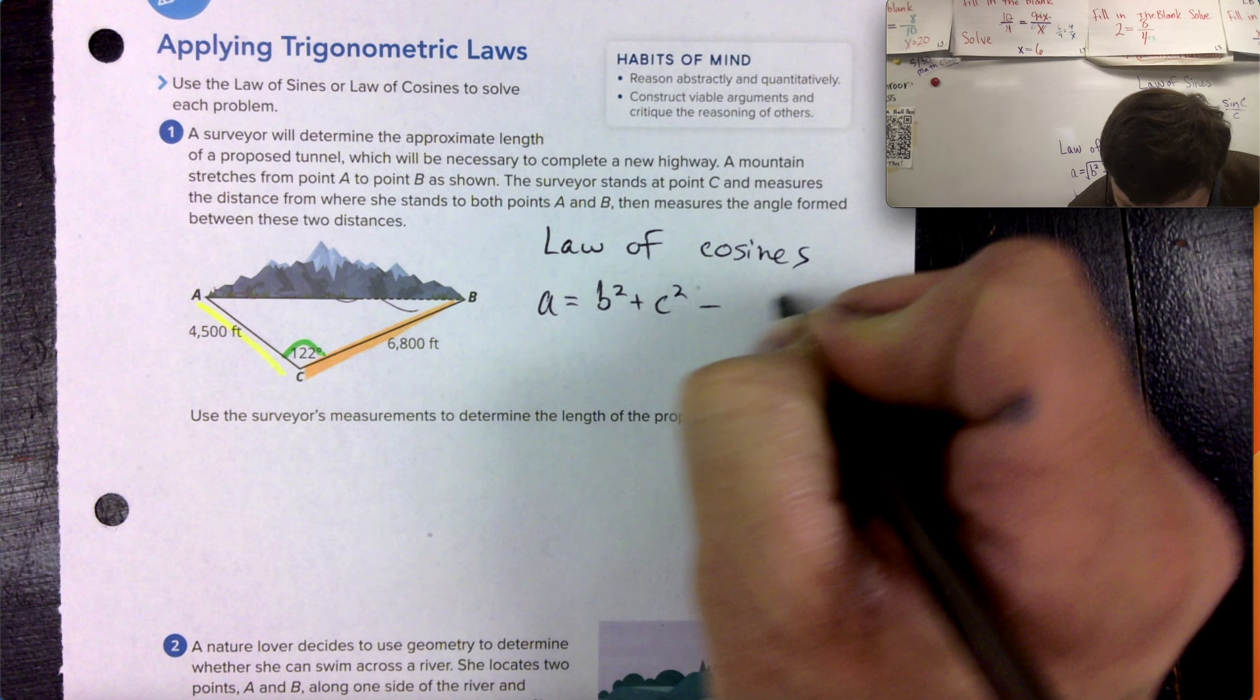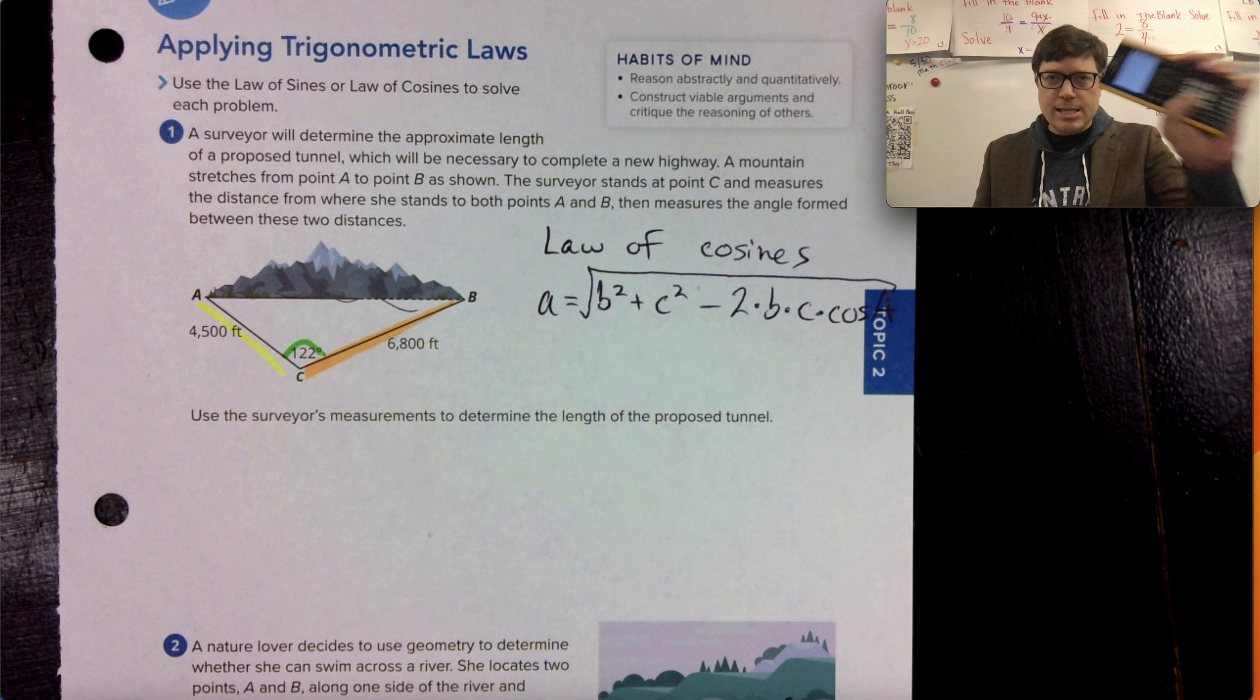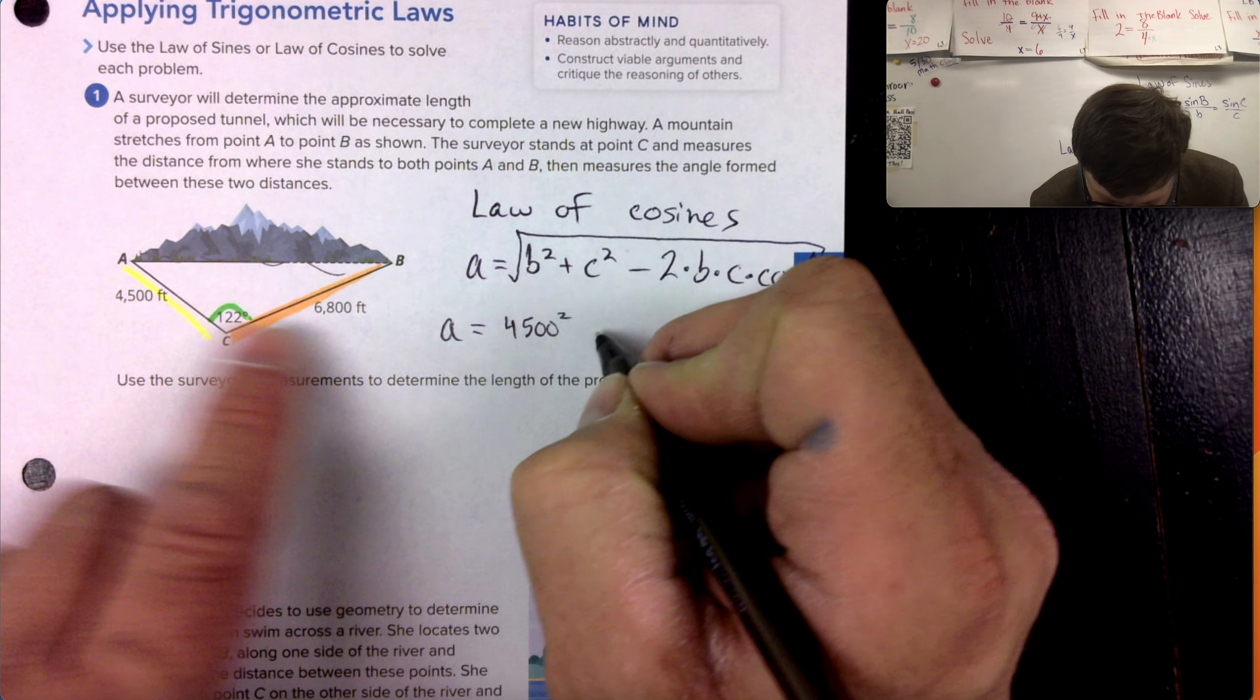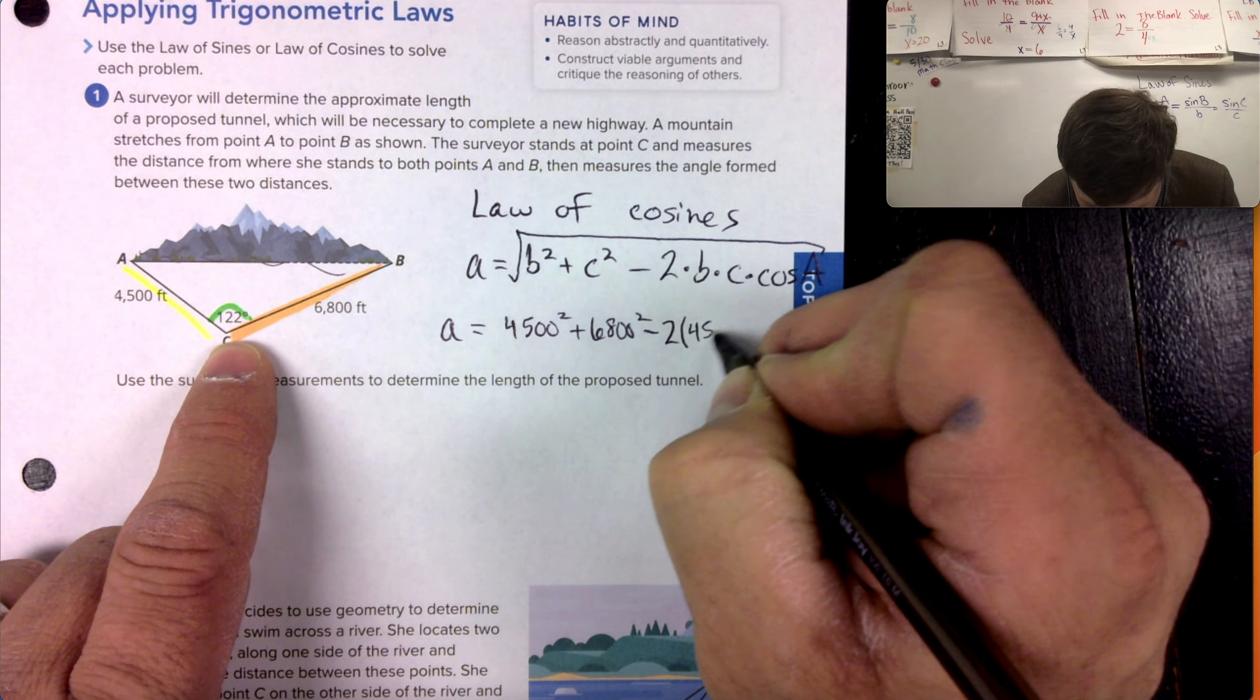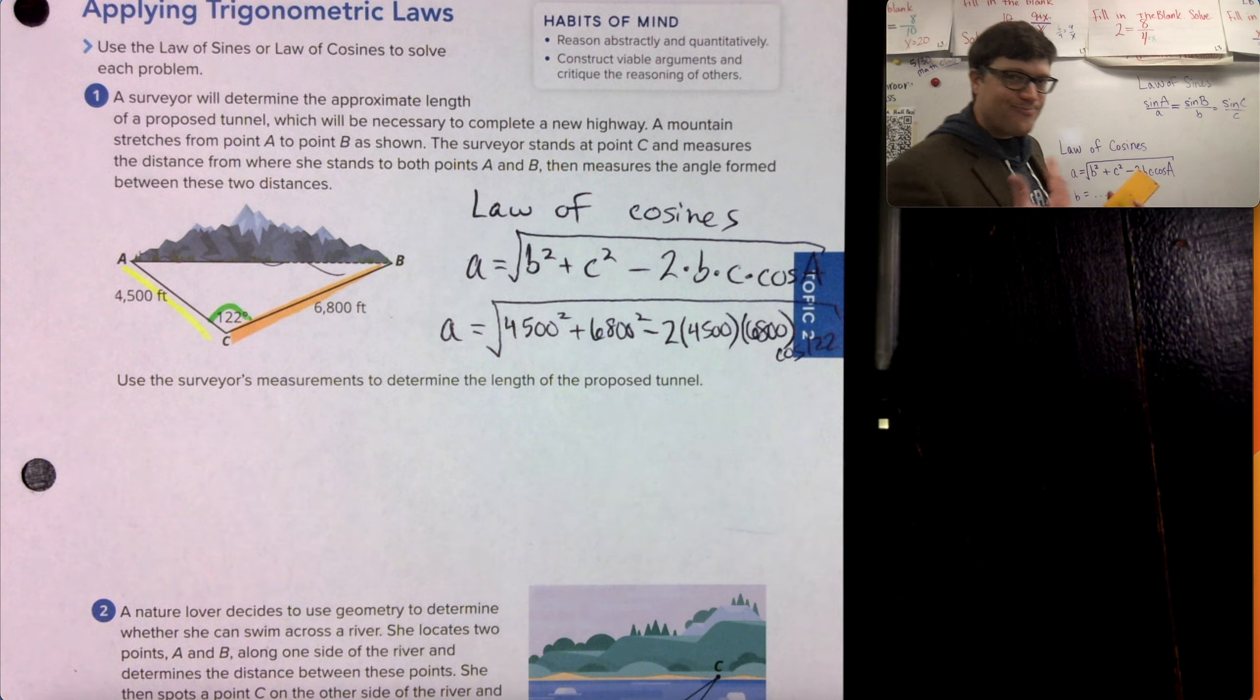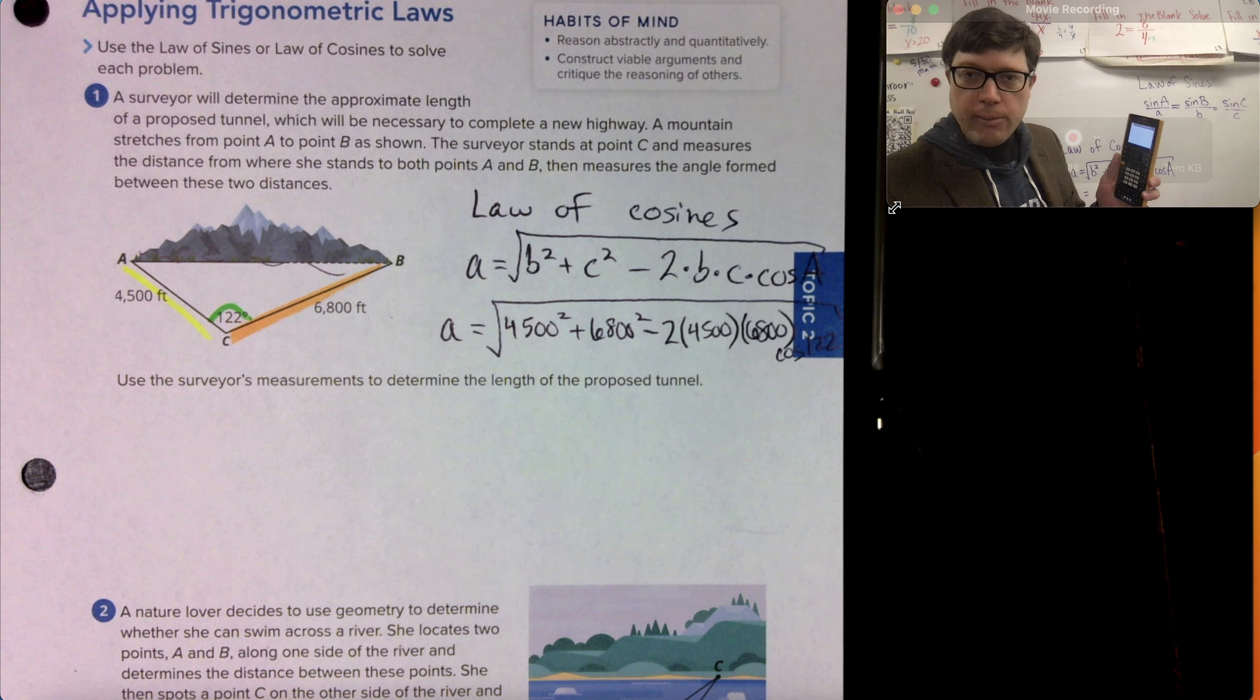A equals B squared plus C squared minus two times B times C times cosine of A. And we're going to square root. And all of that can go into the calculator right now. I'm going to handwrite it all out, but then I'm going to go to the calculator with it. So A equals 4,500 squared plus 6,800 squared minus 2 times 4,500 times 6,800 times cosine of 122. Sorry, there is a topic to like box in the way. Rude.